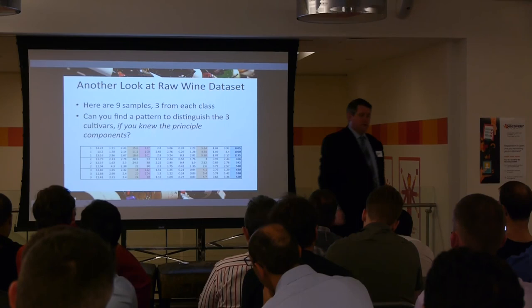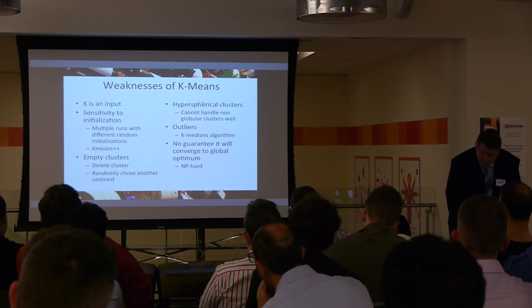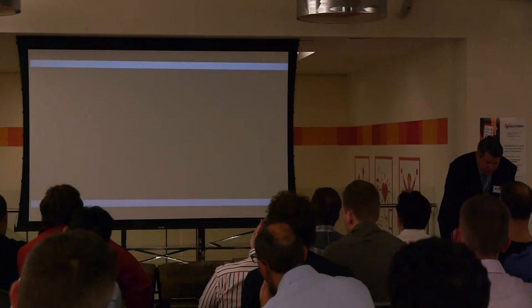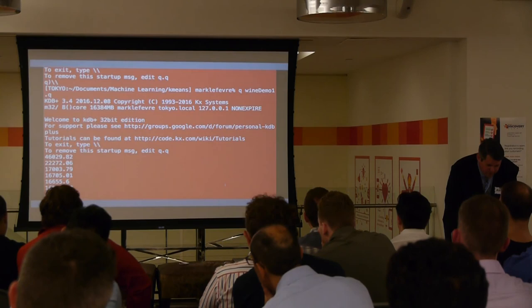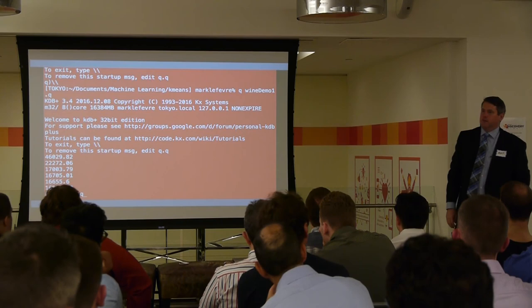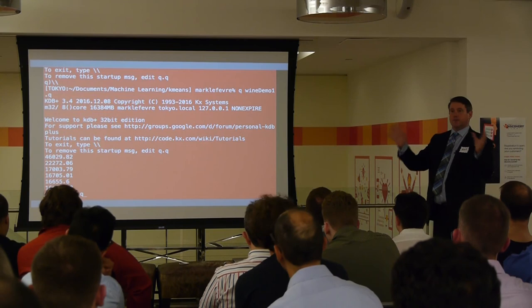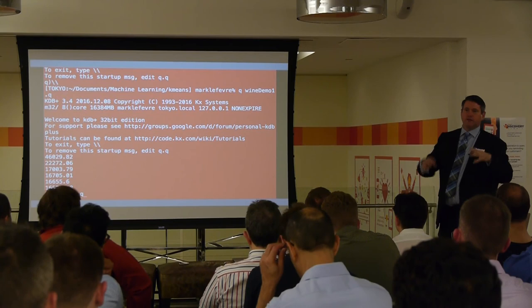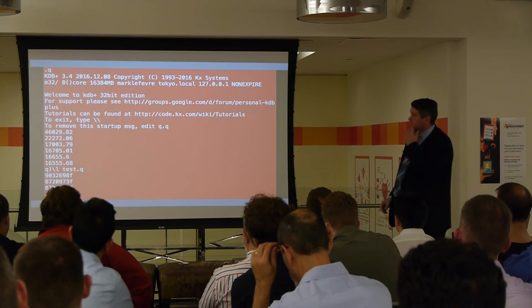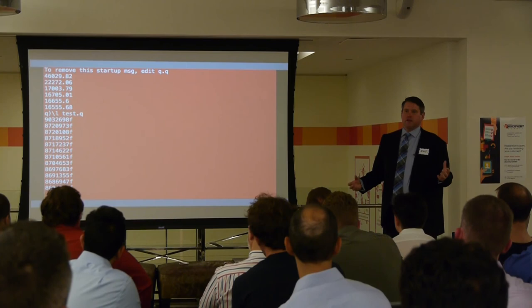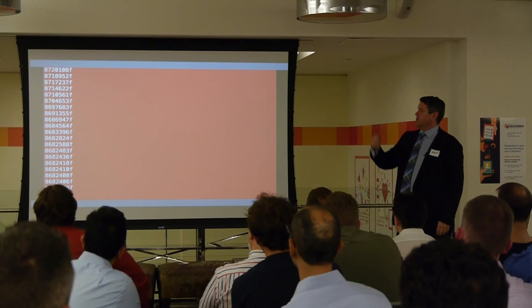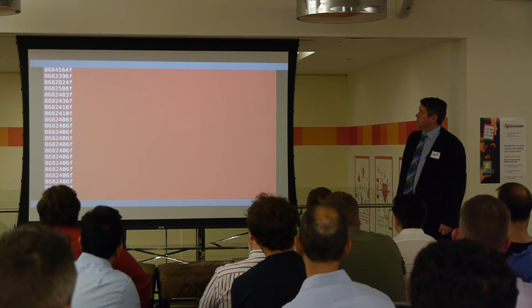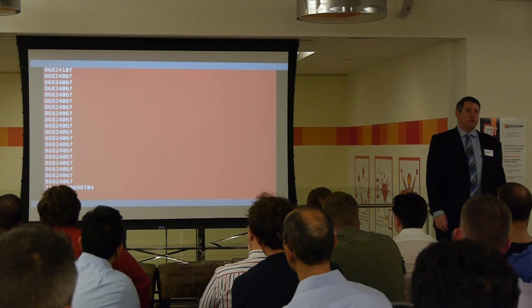K-means is not perfect — it has a couple of weaknesses. Someone in the audience asked what if you had a million data points. I did 100,000, keeping the 13 dimensions but randomly taking 100,000 data points instead of 178, to show how it scales. It takes about 20 seconds to run — that's 100,000 times 3 times 13 attributes worth of computation. So that took 21 seconds. That's one of the weaknesses: it's not the fastest algorithm in the world.